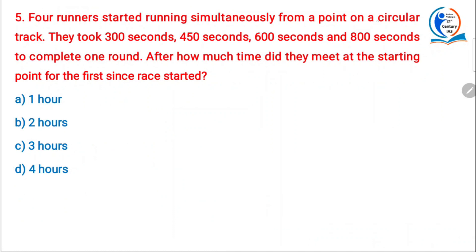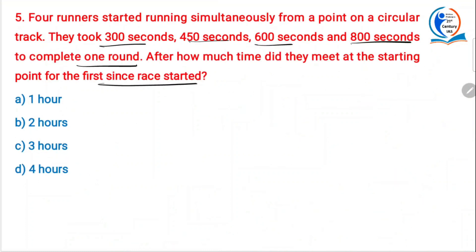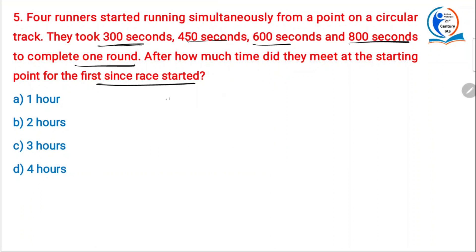Next question: four runners started running simultaneously from a point on a circular track. They took 300, 450, 600, and 800 seconds to complete one round. After how much time did they meet at the starting point for the first time? I explained the bells concept — the same thing applies here. Instead of bells, we are taking runners. Bells ringing at the same time or runners meeting at the same time is the same — find the LCM.